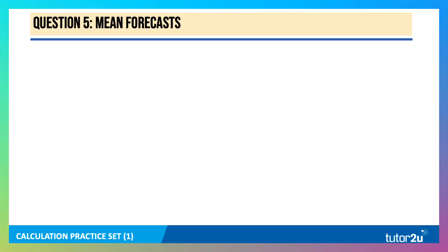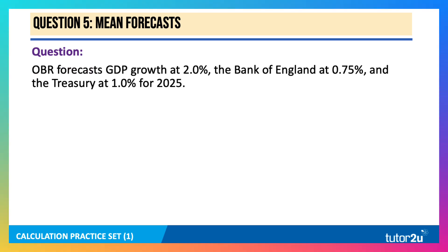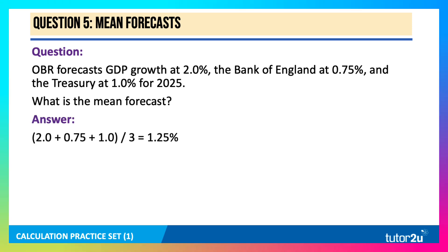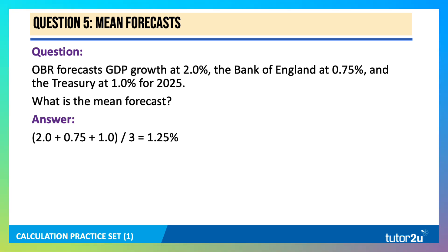Question 5 is about mean data and mean growth forecasts. The OBR forecasts UK GDP growth of 2%, the Bank of England at 0.75%, and the Treasury at 1% for 2025. What is the mean forecast growth for the UK? The mean is the average of the three: 2.0 plus 0.75 plus 1.0, divided by 3, giving a mean growth forecast of 1.25%.